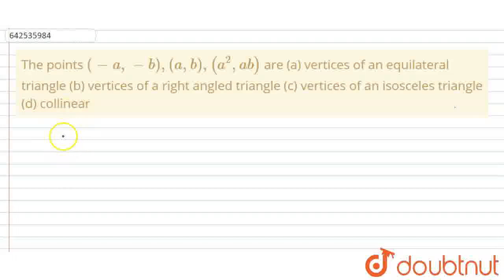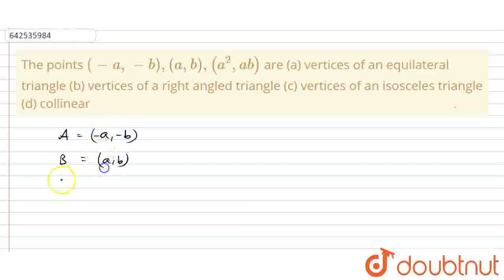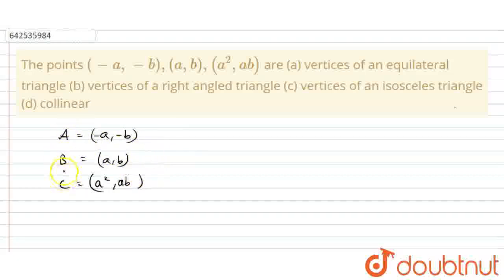First, I am going to write down the given points. So here I am going to take point A equal to (-A, -B), point B equal to (A, B), and point C equal to (A², AB). So these are the points which form this triangle. I am going to find the distance between AB, BC, and CA.